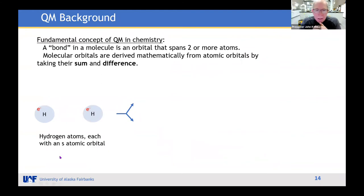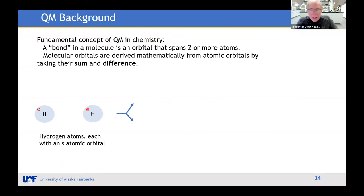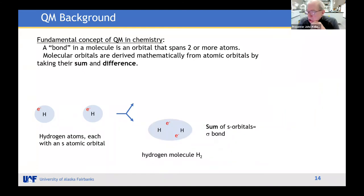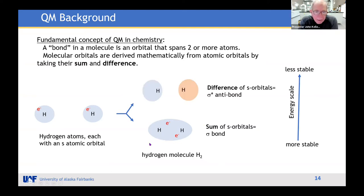To briefly review quantum mechanics: a bond in a molecule is an orbital that spans two or more atoms — a molecular orbital derived mathematically from atomic orbitals by taking their sum and difference. In the simplest case, two hydrogen atoms with their 1s orbitals approach each other and form the H₂ molecule. This gives two molecular orbitals: one is the sum of the two spherical functions — the bonding orbital — and the other, called the anti-bond, is the mathematical difference, which creates a node of zero probability between the atoms. In H₂, this anti-bonding orbital is empty.